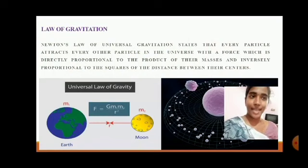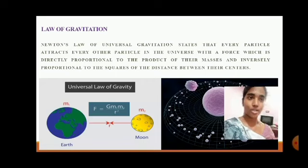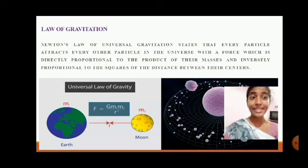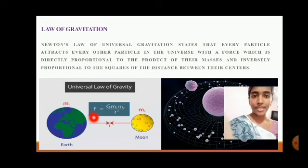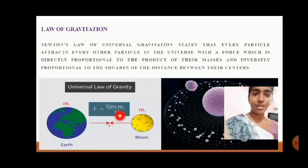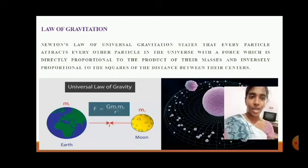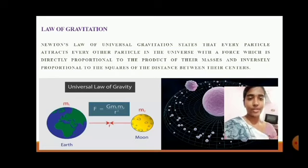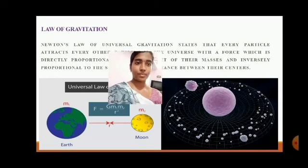Newton's law states that every particle attracts every other particle in the universe with a force that is directly proportional to the product of their masses and inversely proportional to the square of the distance between their centers. The formula is F = G·(m₁·m₂)/r², where G is the gravitational constant. This is the formula for gravitational force.